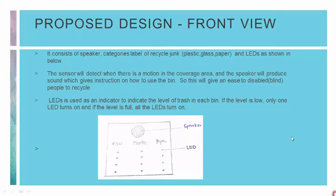The front view of our design consists of a speaker, category labels for recycled junk such as plastic, glass, and paper, and LEDs as shown. The sensor detects when there is motion in the coverage area, and the speaker produces sound giving instructions on how to use the bin. This gives ease to disabled people, especially the blind, to recycle. LEDs are used as indicators of the trash level in each bin — if the level is low, only one LED turns on, and if the level is full, all the LEDs turn on.